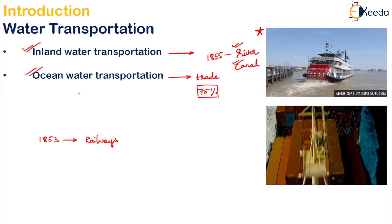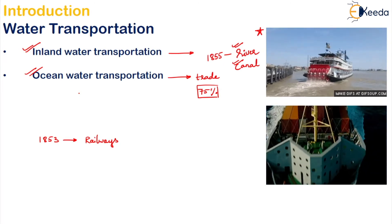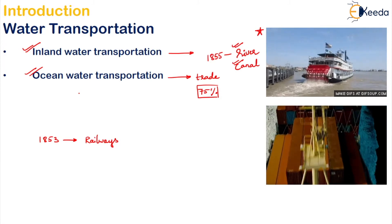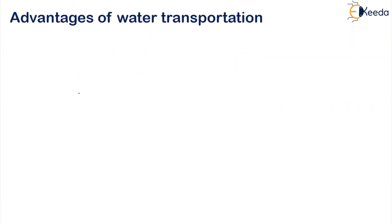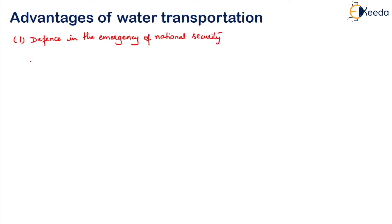Water transportation is still considered an important agency for transportation of men or materials because it affords several advantages. The first advantage is that it provides a powerful means of defense in case of emergency or national security. Defense is one of the major advantages of water transportation.